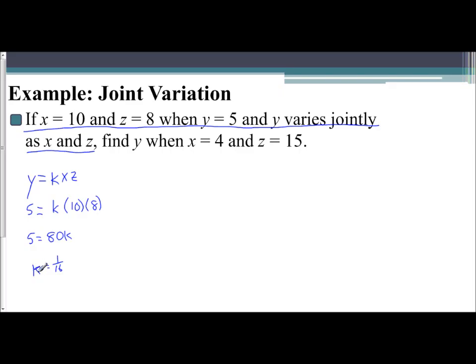So my k value is 1/16. And I use that with the second part, find y when x equals 4 and z equals 15. So y equals k times x times z. I now know k is 1/16. If x is 4 and z is 15, I want to find y.